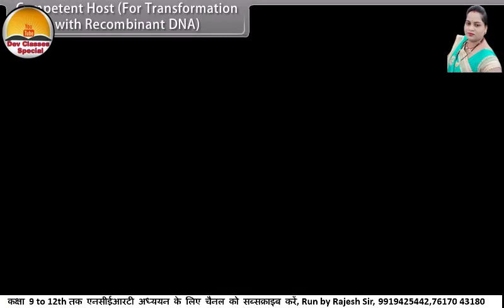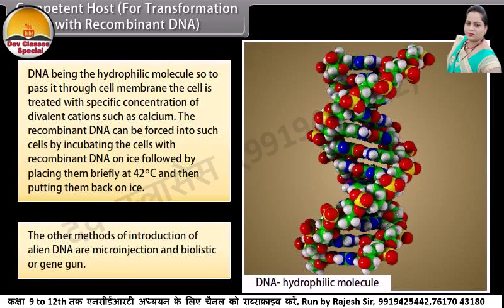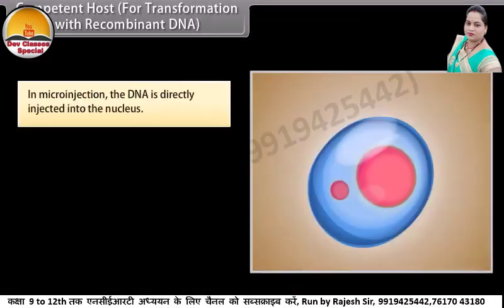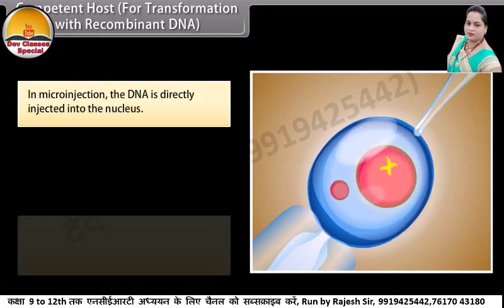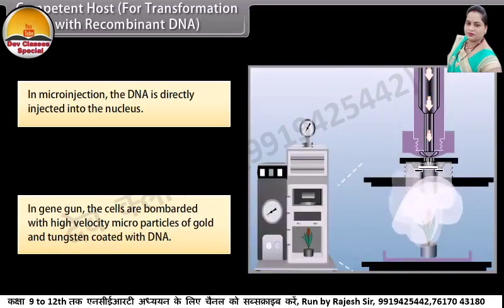Competent host for transformation with recombinant DNA. DNA being a hydrophilic molecule, to pass it through the cell membrane, the cell is treated with a specific concentration of divalent cations such as calcium. The recombinant DNA can be forced into such cells by incubating the cells with recombinant DNA on ice, followed by placing them briefly at 42 degrees Celsius, then putting them back on ice. Other methods of introduction of alien DNA are micro-injection and biolistics, or gene gun. In micro-injection, DNA is directly injected into the nucleus; in gene gun, cells are bombarded with high-velocity microparticles of gold and tungsten coated with DNA.